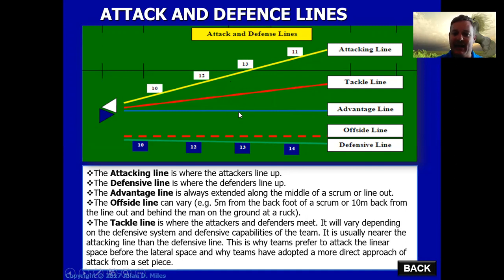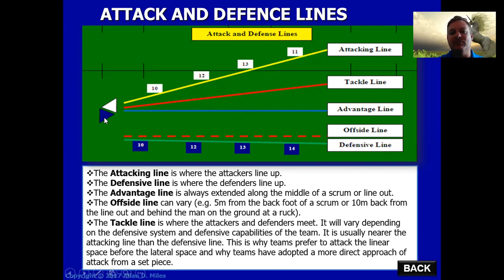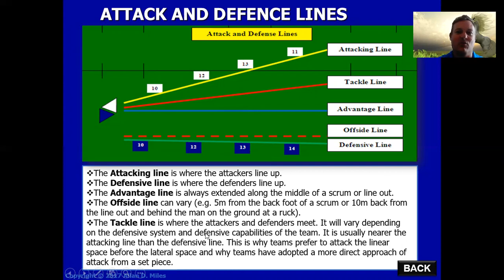If we get gain line success or get past the advantage line, we can then have the 15 on 7 principle come into play, which will take these eight forwards out of the game because they would then have to run backwards to get back onside. Our objective from the set piece is to get gain line success and to be more direct, looking after that linear space first before being more lateral on attack from the set piece.